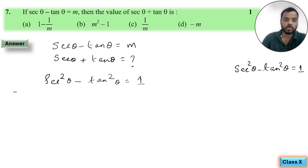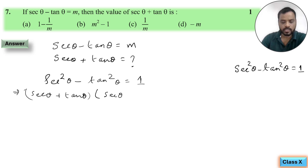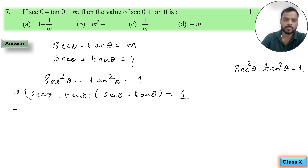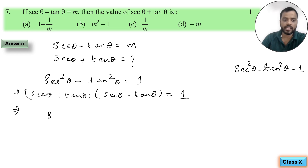sec²θ minus tan²θ equals 1 को हम break कर सकते हैं: (sec θ + tan θ) into (sec θ minus tan θ) equals 1. अब sec θ minus tan θ की value m दी हुई है, तो हम लिखेंगे: (sec θ + tan θ) × m = 1.